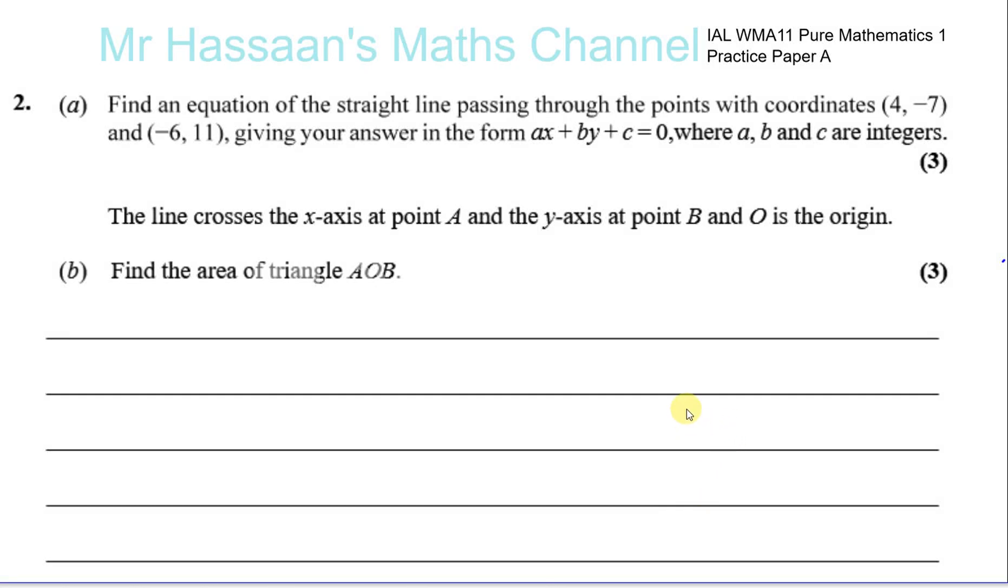Question number two from practice paper A for the P1, the Pure Mathematics 1 International A-level paper. Find an equation of the straight line passing through the points with coordinates (4, -7) and (-6, 11), giving your answer in the form AX + BY + C = 0, where A, B and C are integers.